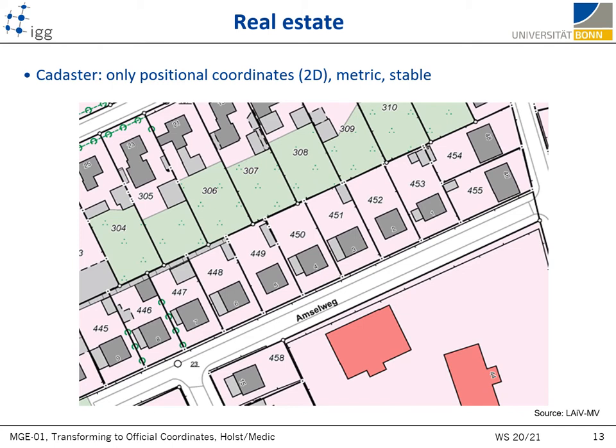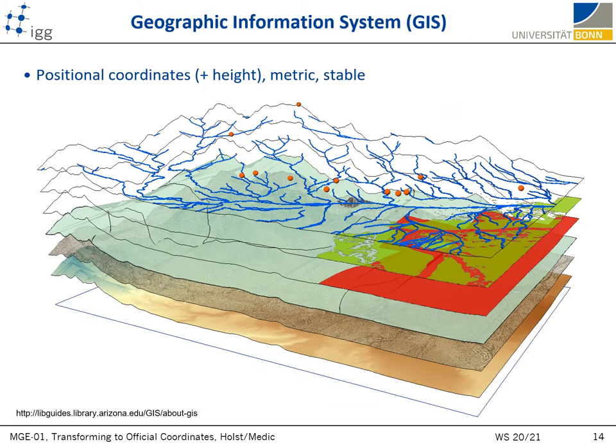Another important use case for metric and permanently stable official coordinates are Geographic Information Systems, or GIS, which gather, manage, and analyze a variety of spatially and geographically related data. The number of use cases is practically unlimited, spanning through spheres of science, government, business, and industry.